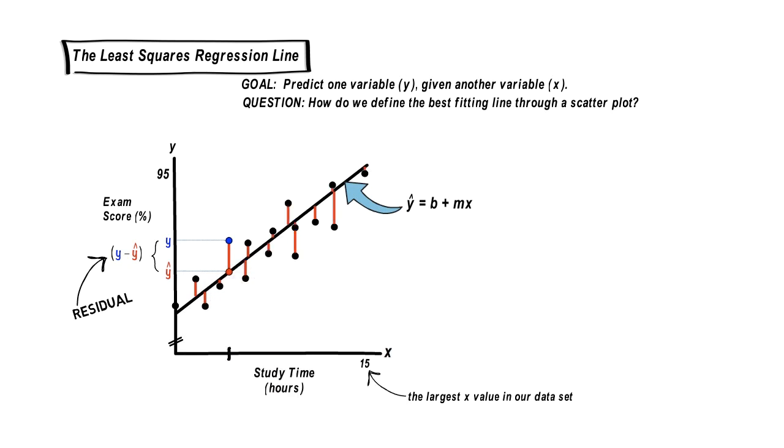OK, let's think about this. We want our line to mimic the behavior of the dots, which means we would like each dot to be close to the line, which means we want each residual value to be as small as possible.